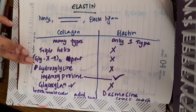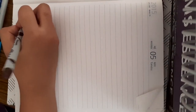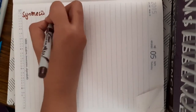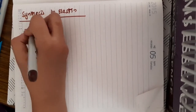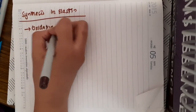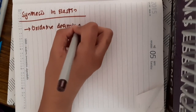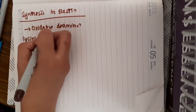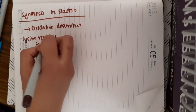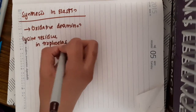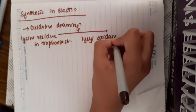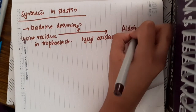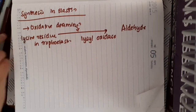We will see some salient features of elastin synthesis. We are not going into the details, only the important features. In elastin synthesis, oxidative deamination occurs where the lysine residues present in tropoelastin undergo oxidative deamination in the presence of the enzyme lysine oxidase and form aldehydes. These are lysine-derived aldehydes.